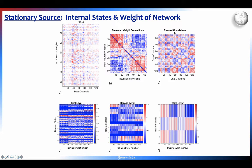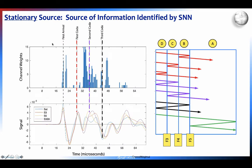Even after downsampling there are still correlations among the channels, so we could downsample more or use a convolutional neural net. Looking at internal states on the first, second, and third layers, by the third layer we see the emergence of a very clear signature difference among the three saturations. With L1 regularization we can examine the highest weights: a little weight is on the first arrival, but most weight falls in the overlap region — the first and second codas — confirming that the codas carry most of the information.